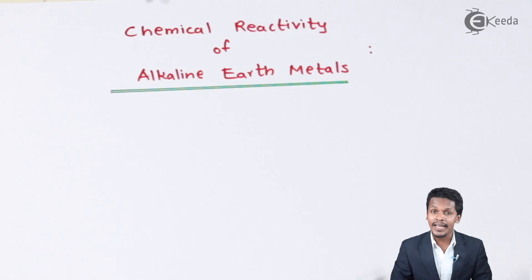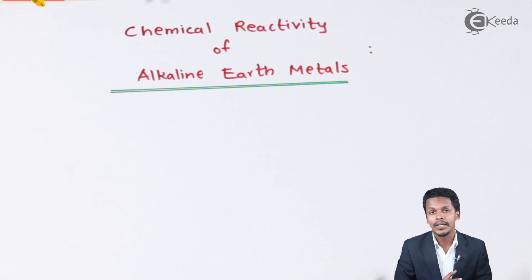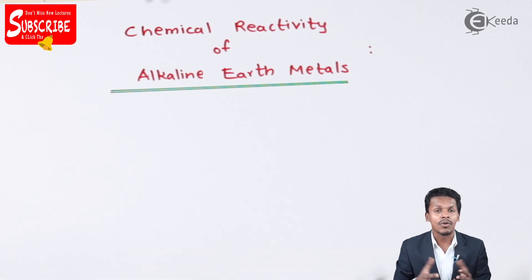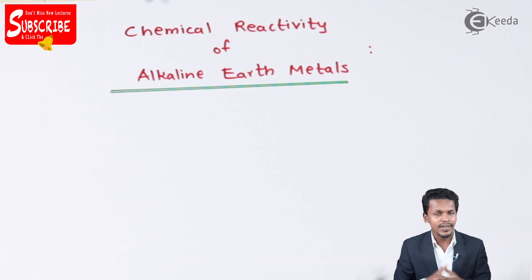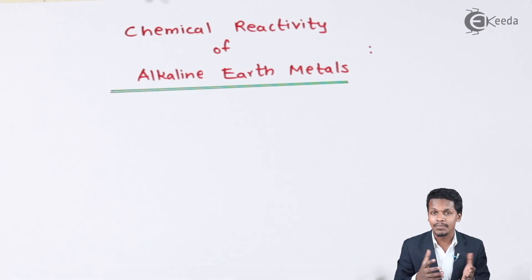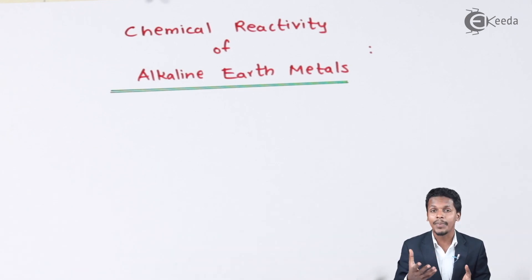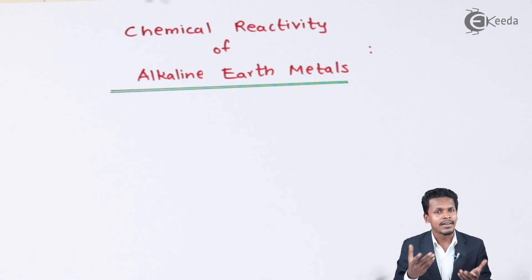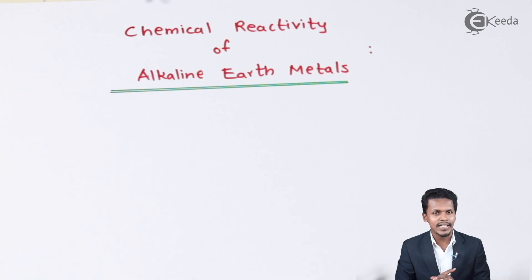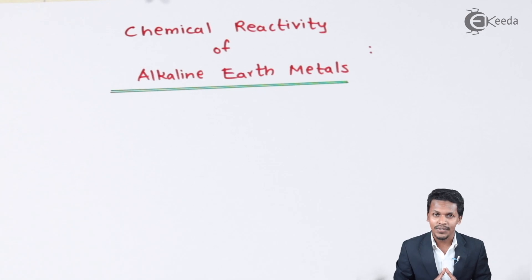Talking about chemical reactivity, these metals or s-block elements are basically very reactive towards oxygen, hydrogen, and water. We are going to discuss each of these: what happens when these metals react with oxygen, then with H₂O, and finally with halogens. Let me start with the first point — the reaction of alkaline earth metals towards oxygen.